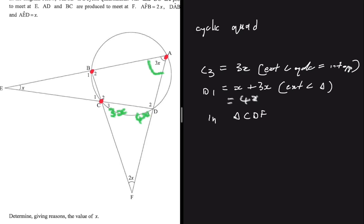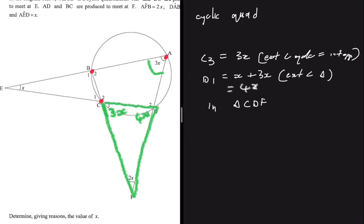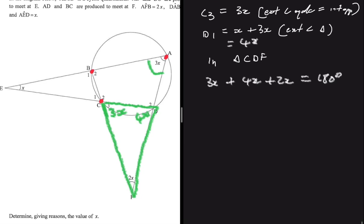Now in this triangle we have 2x, 3x, and 4x. So in triangle CDF we can say that 3x plus 4x plus 2x equals 180 degrees - that's the sum of angles in a triangle. We get 9x equals 180 degrees, and if you divide both sides by 9, you get x equals 20 degrees.